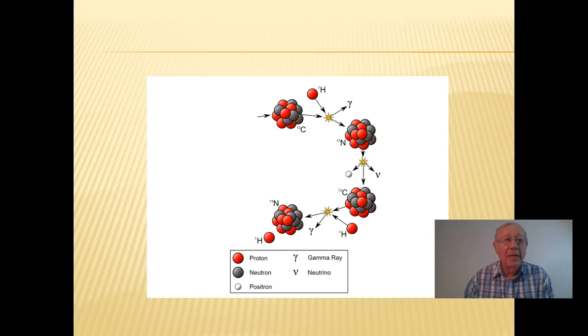That nitrogen then can collide with a proton again, and we have again another gamma photon along with the production then of oxygen-15.